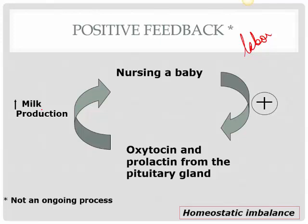When negative feedback mechanisms don't work properly and actually become positive, we have homeostatic imbalance. For example, in Graves disease or hyperthyroidism, the thyroid gland is not switched off — it just keeps producing hormone. When it produces more than the normal amount, the effects become hyper or over-exaggerated. The thyroid hormone helps maintain body temperature, so if you're producing more, your body temperature rises even more — the person starts feeling very hot and begins to sweat. So when normal negative feedback mechanisms fail, you get homeostatic imbalance.